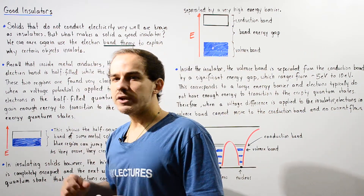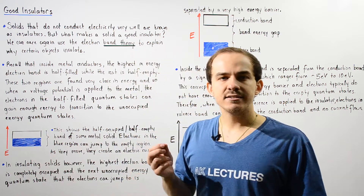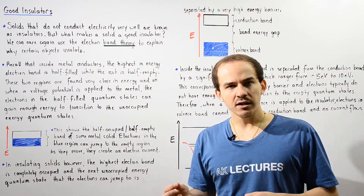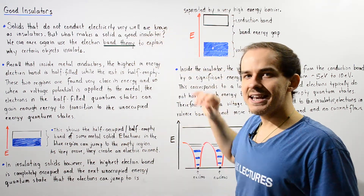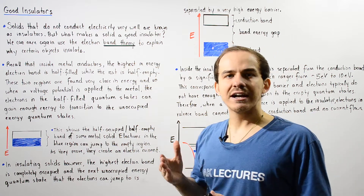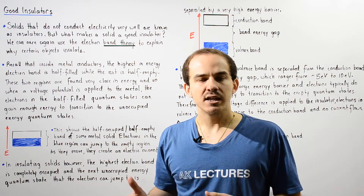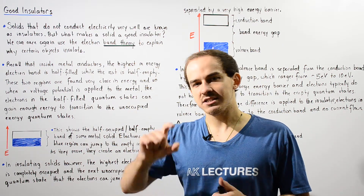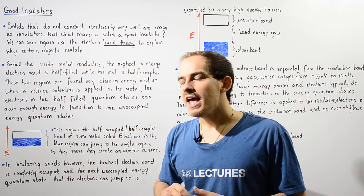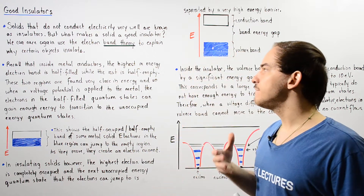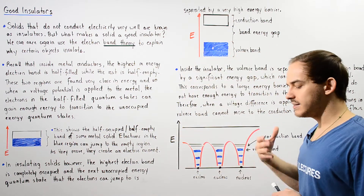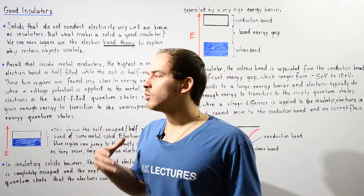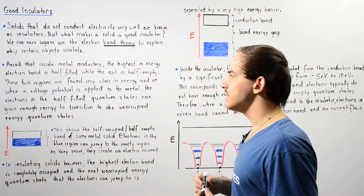Recall that inside solid metal conductors, the highest-in-energy electron band is only half-filled, and that means the rest of it is half-empty. It contains unoccupied energy quantum states.